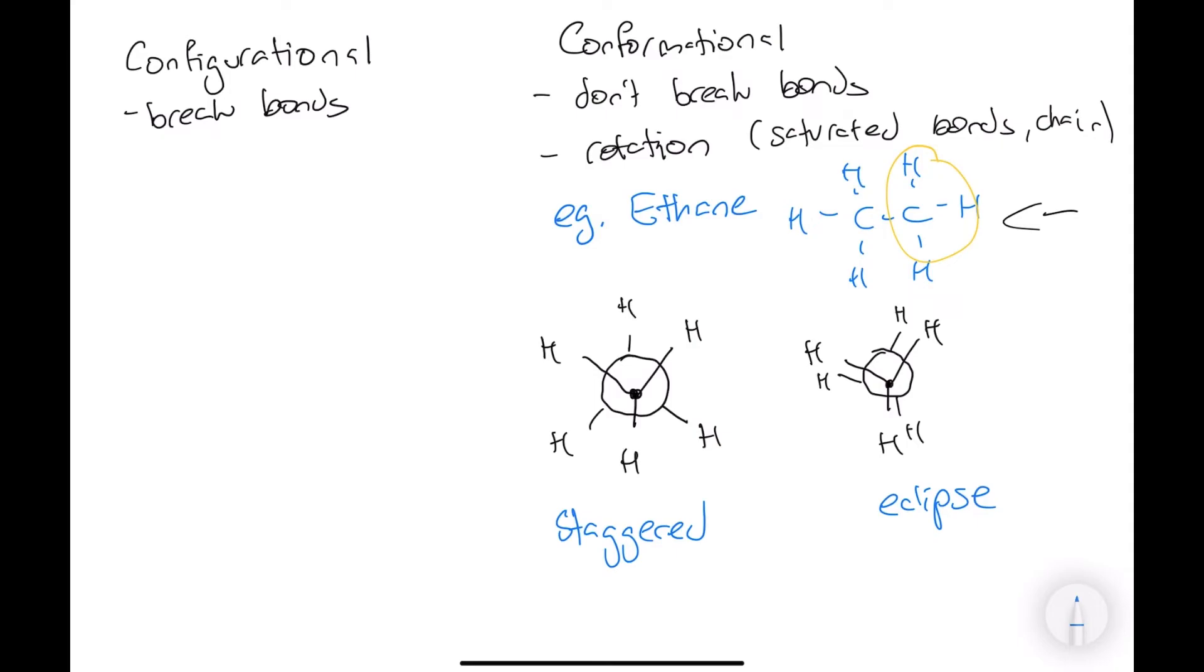So maybe pause this video and think about which one would be more stable. The eclipsed where the hydrogens are directly at the same side of each other, or staggered where they're kind of away from each other.